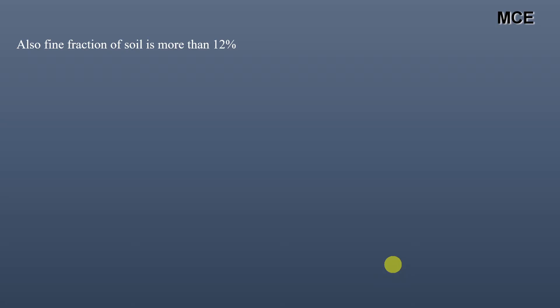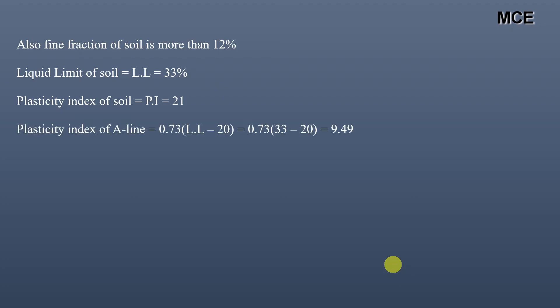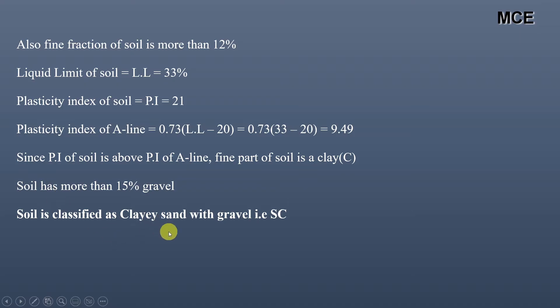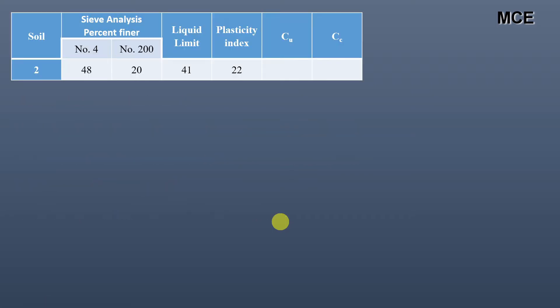Since the fine fraction is more than 12%, we must determine whether it is silt or clay. The liquid limit is 33%, plasticity index is 21%, and the PI of the A-line is 0.73 × (LL − 20) = 9.49. The soil PI is above the A-line PI, so the fine part is clay — symbol C. This soil has more than 15% gravel, so the group name is Clay Sand with Gravel, group symbol SC.